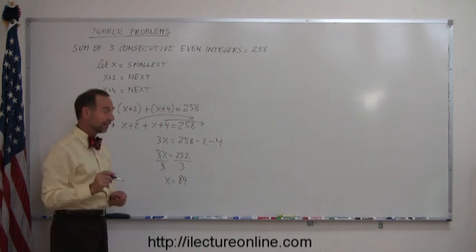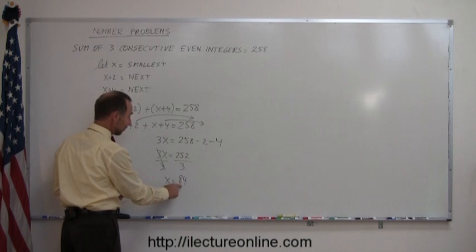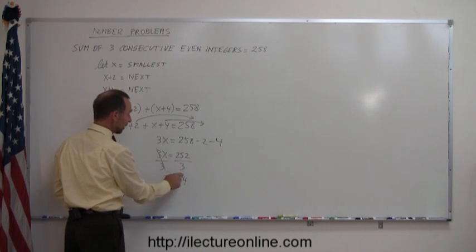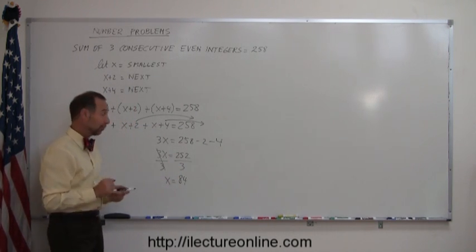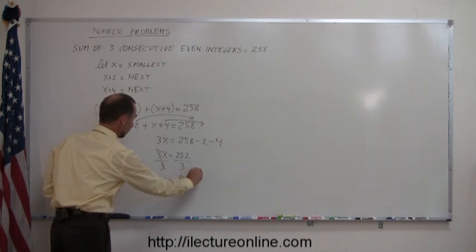And again, quickly to check if I did this correctly, if I multiply 3 times 80, I get 240. 3 times 4, I get 12. 240 plus 12, that's 252. And that should be correct.